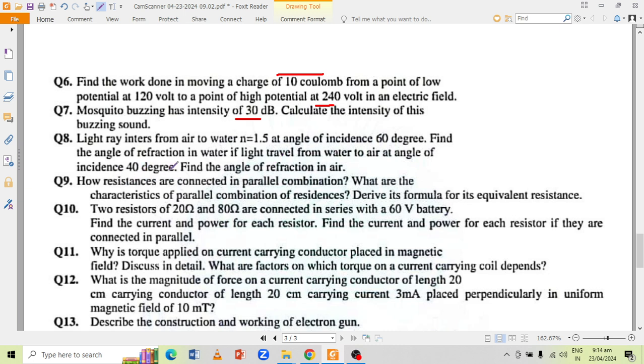How resistances are connected in parallel combinations? What are the characteristics of parallel combination and derive its formula of equivalent resistance? Two resistors of 20 ohm and 80 ohm are connected in series with 60 volt battery. Find the current and power for each resistor.